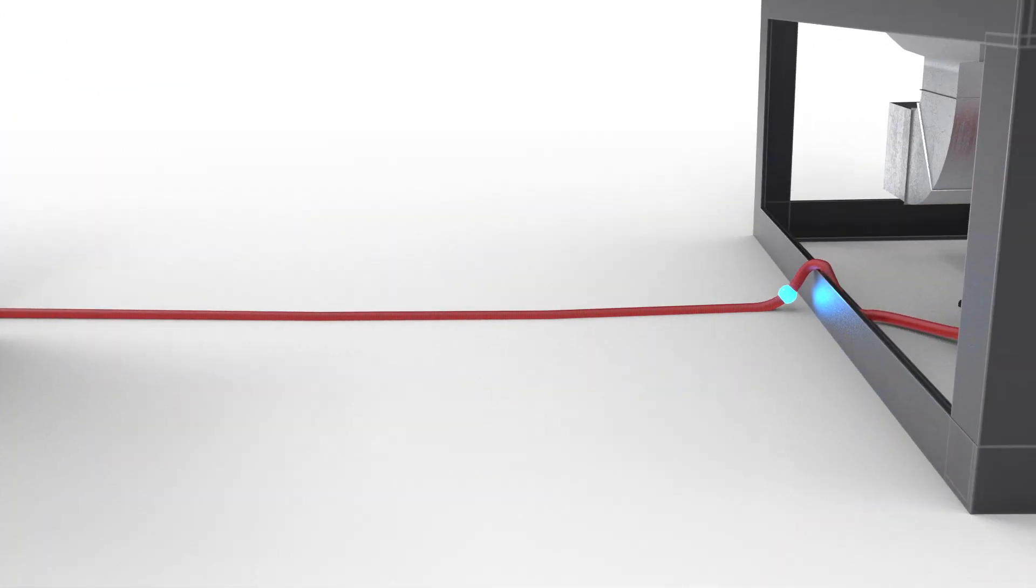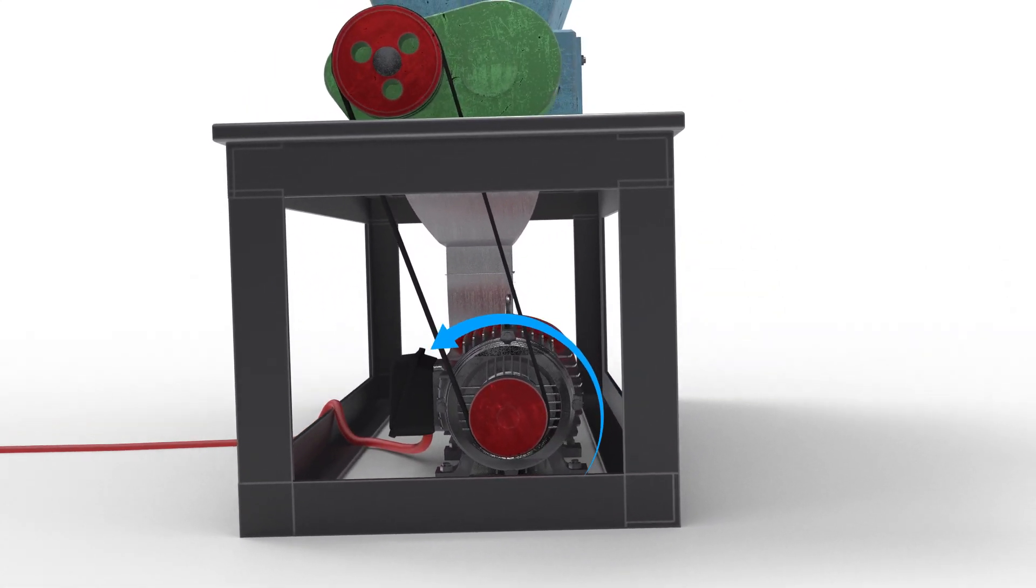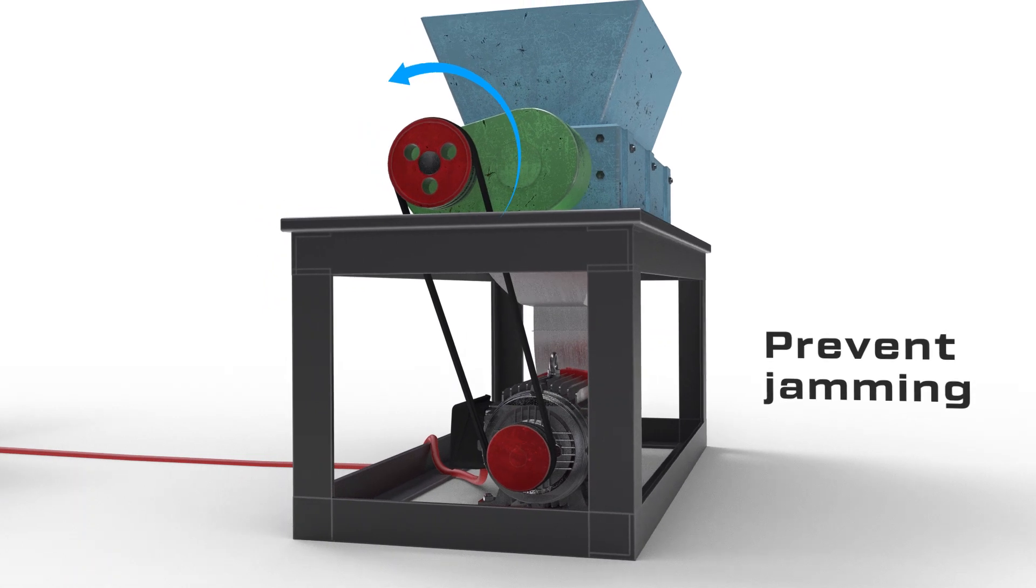TRIO low voltage and medium voltage VFDs provide a soft start for the electric motors, which can prevent shredder jamming.